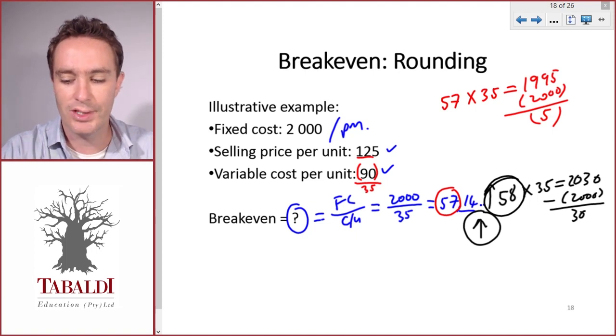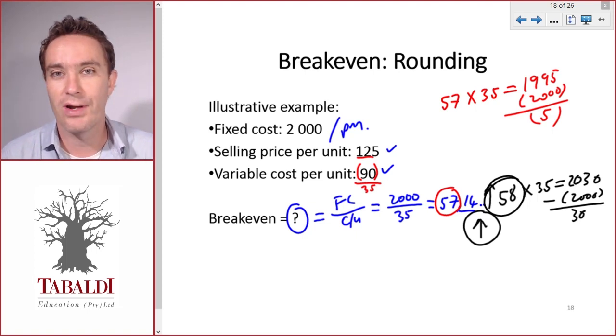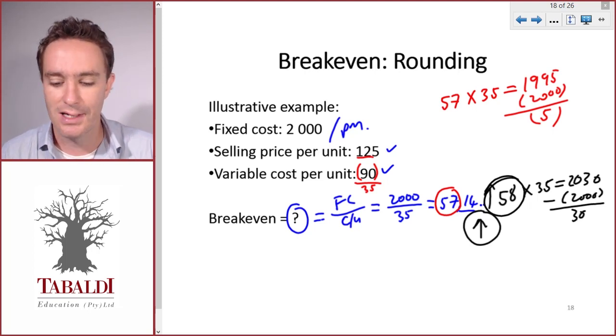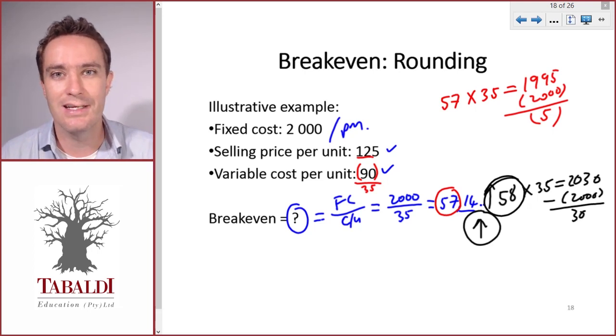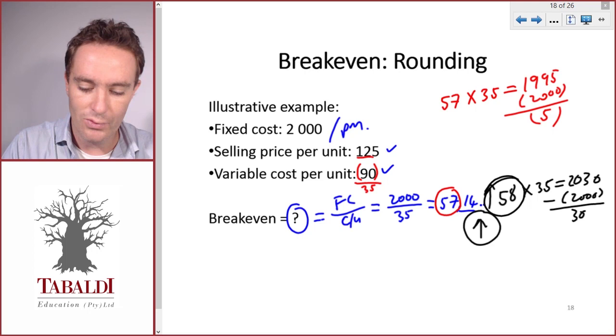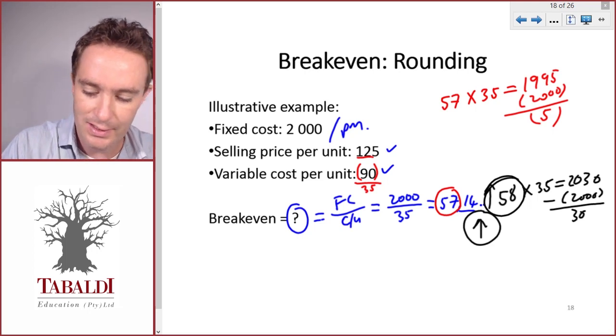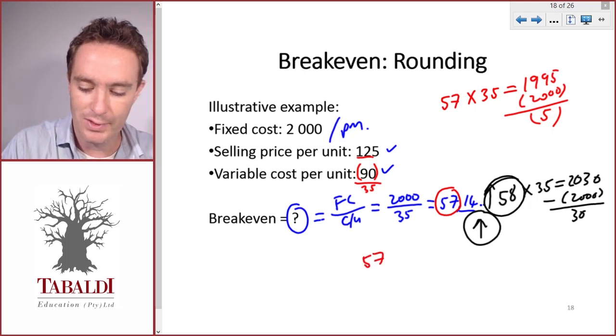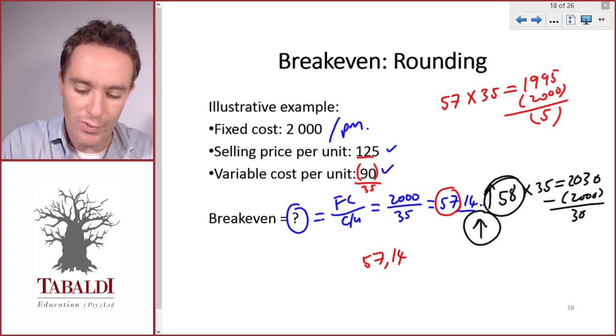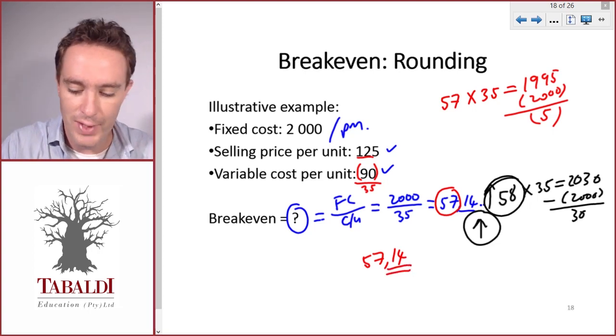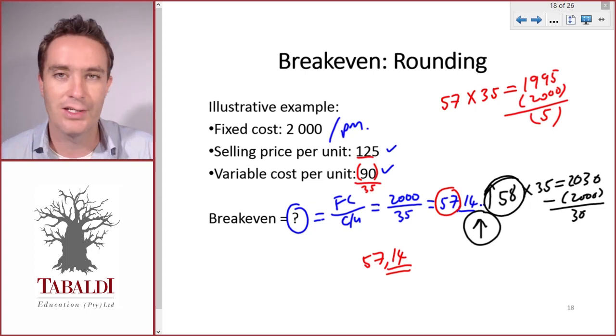Now some questions might deal with products like liquids, fuel, oil, chemicals, or something that could be sold in smaller fractions like grain or sand. Then we might leave it with the decimal. So 57.14 could be the breakeven if we can sell meaningfully a fraction of the product.